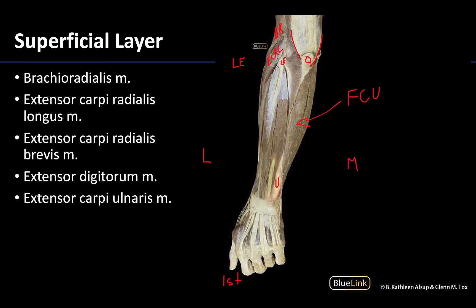In this extensor compartment there are two extensor carpi radialis muscles. The extensor carpi radialis longus attaches more superiorly. There is also the extensor carpi radialis brevis, and as its name suggests it is going to be smaller or shorter than its counterpart.